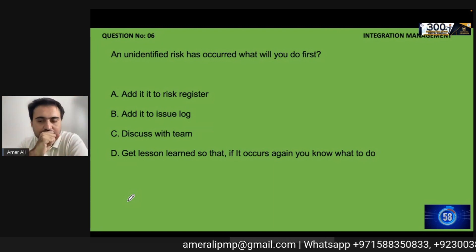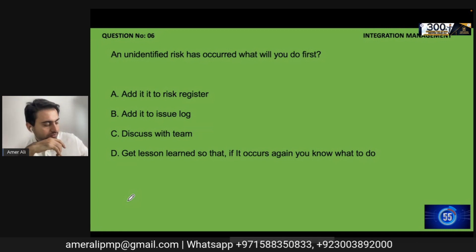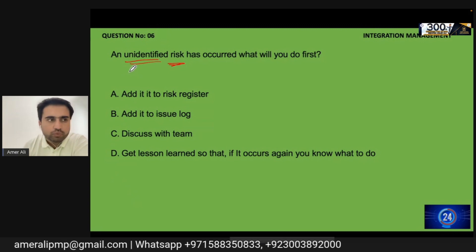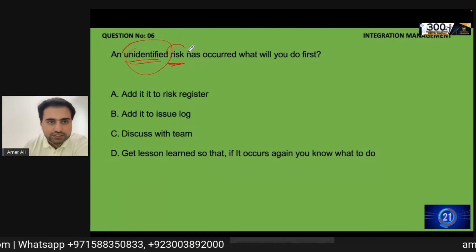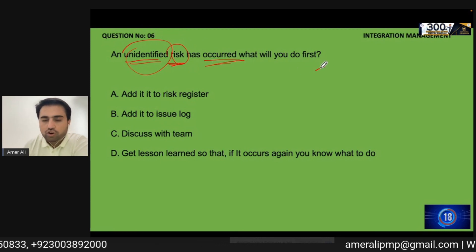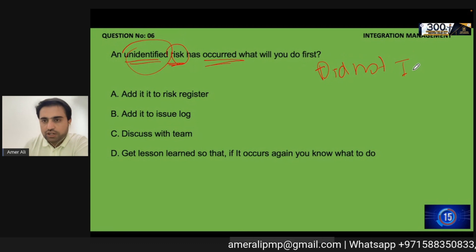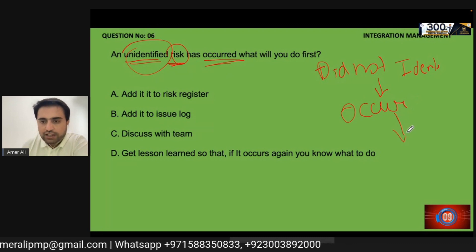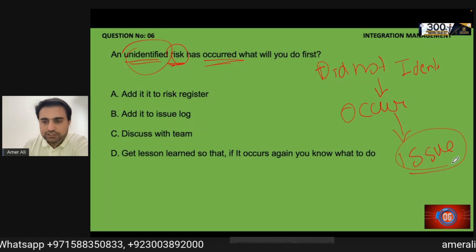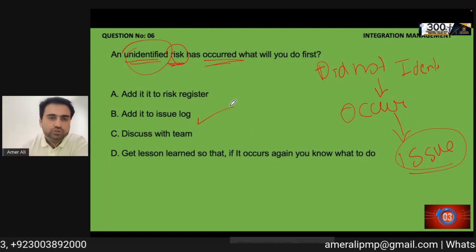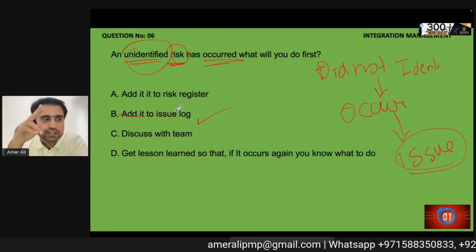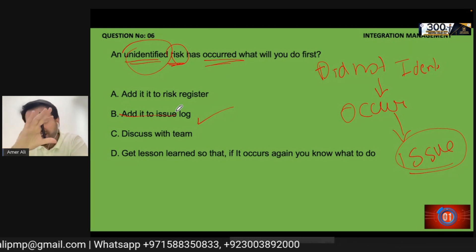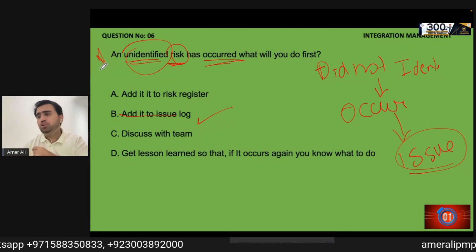An unidentified risk has occurred — something you did not identify has now happened. This is an issue. You add it to the issue log. This is a straight one-liner question that many people get wrong. It is a very critical concept: when an unidentified risk occurs, it becomes an issue and goes into the issue log.